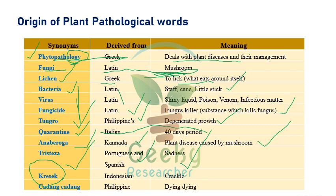Kresek is an Indonesian word meaning 'crackle.' The kresek phase or wilting phase can be observed in rice bacterial leaf blight and is considered a very destructive stage. Kadang-kadang is a Philippines word meaning 'dying' — it is a viroid and the smallest viroid discovered so far, containing just 246 nucleotides.